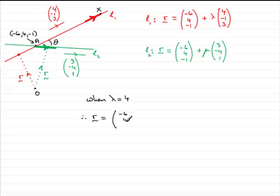plus 4 lots of 4, minus 1, 3. And if you do that, minus 6 plus 4 times 4 is 16, that's going to give you 10,